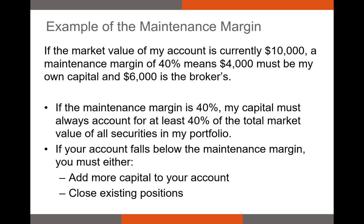Let's take a look at a very basic example of calculating the maintenance margin. Say the market value of my account is currently $10,000 and I have a maintenance margin of 40%. That means $4,000 of my $10,000 brokerage account is my own money — my equity — and $6,000 is the broker's amount, essentially the margin loan I received. So my capital always has to be at least 40% of the total market value of all the securities in my portfolio.